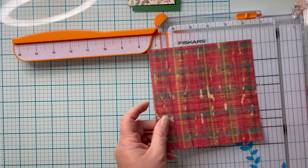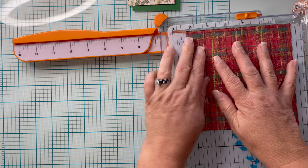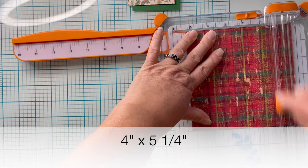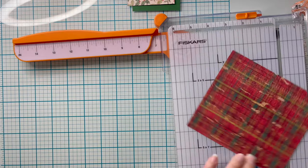Now moving to my second piece of pattern paper, this is going to be the inside layer. I'm going to cut this down to 4 inches by 5 and 1/4 inches.